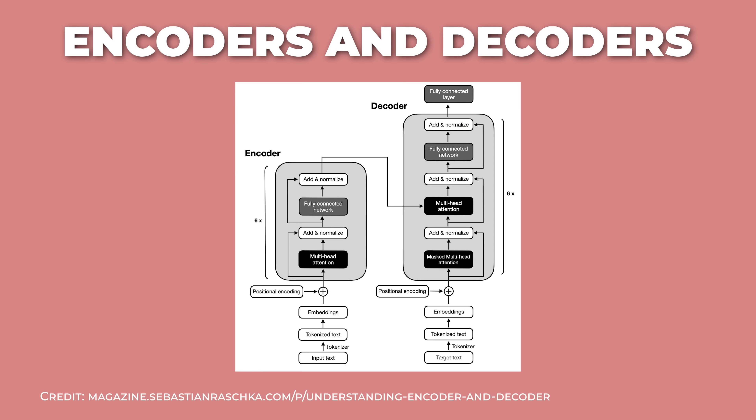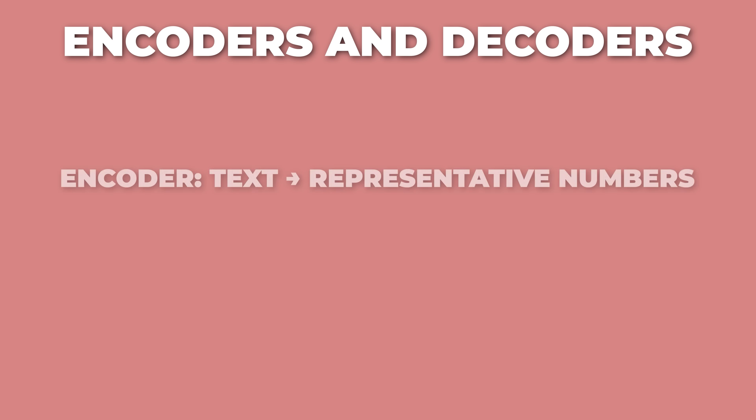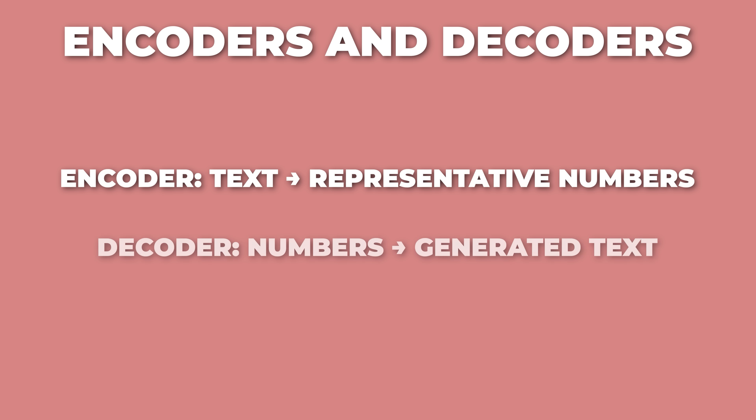Under the hood, different parts of these systems use encoders and decoders. An encoder turns text into those compact numeric summaries that capture meaning, perfect for search and understanding. A decoder turns summaries back into human text, one token at a time, great for generating responses. Some models only encode, some only decode, and some do both.